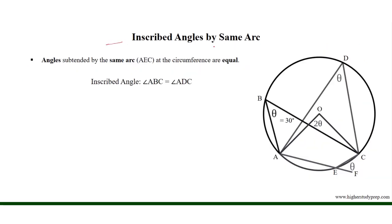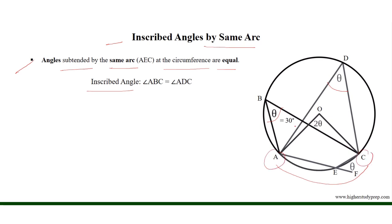Angles subtended by the same arc at the circumference of a circle are equal. For example, inscribed angles ABC and ADC are on the same arc AC with endpoints A and C, so angle ABC equals angle ADC.